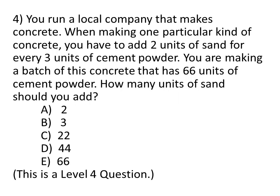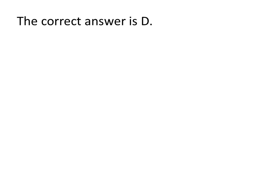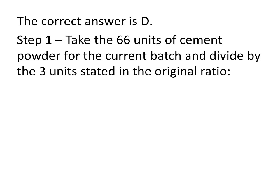Here is question 4. The correct answer is D. For step 1, take 66 units of cement powder for the current batch and divide by the 3 units stated in the original ratio. You will remember the original ratio was 2 units of sand to every 3 units of cement powder. So, 66 divided by 3 is equal to 22.